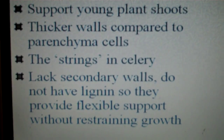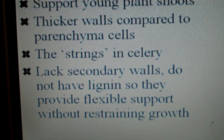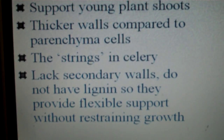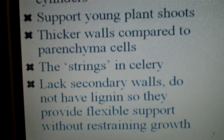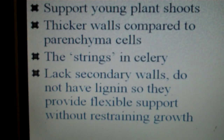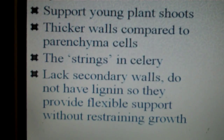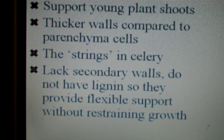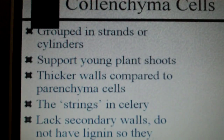Even though they have thicker walls, they do lack secondary walls — they do not have lignin. Lignin is a glue-like polymer found in secondary walls. Lignin usually makes some plant parts stronger, more waterproof, and less vulnerable to attacks. So without lignin, they provide flexible support. Lignin generally makes a plant strong and sturdy, so by lacking it, they're more flexible and can provide support without restricting the growth of the plant. They're living cells and they are flexible. That's the colenchyma cells.